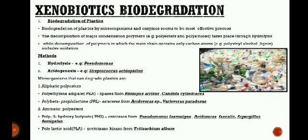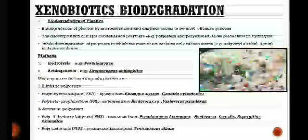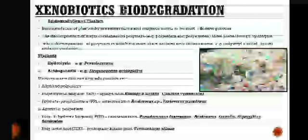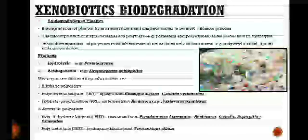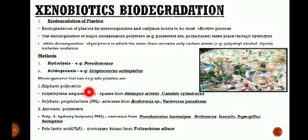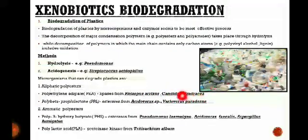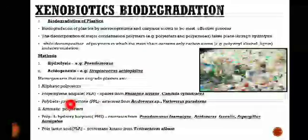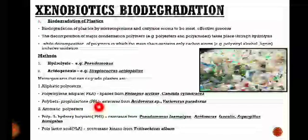The microorganisms that can degrade plastic are grouped under aliphatic polyesters and aromatic polyesters. Aliphatic hydrocarbons contain carbon and hydrogen atoms, whereas aromatic chains contain one or more aromatic rings like benzene rings. Aliphatic polyesters include polyethylene adipate (PEA), degraded by lipase from Rhizopus arises bacteria and Candida cylindracea. The next aliphatic polyester is poly-beta-propiolactone (PPL), degraded by esterases from Acetobacter species and Variovorax paradoxus.